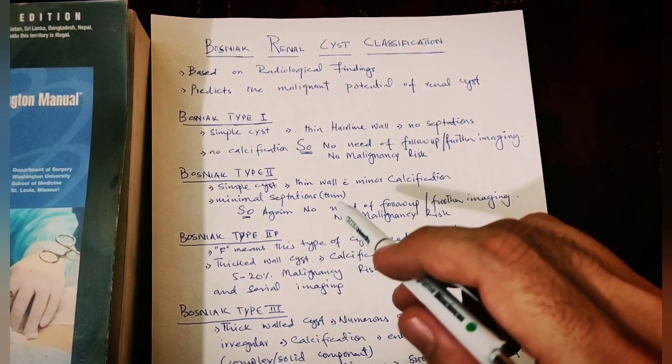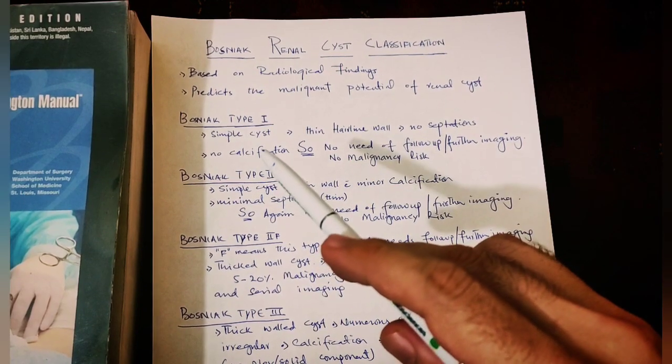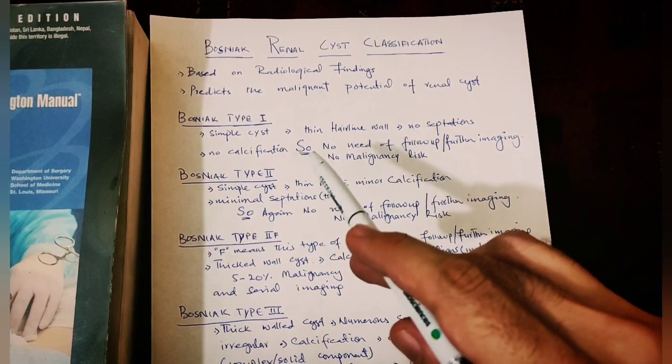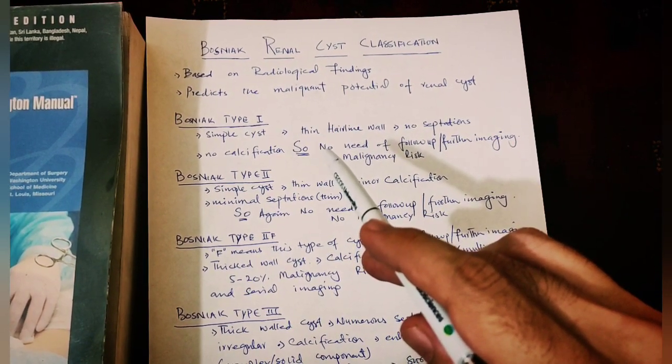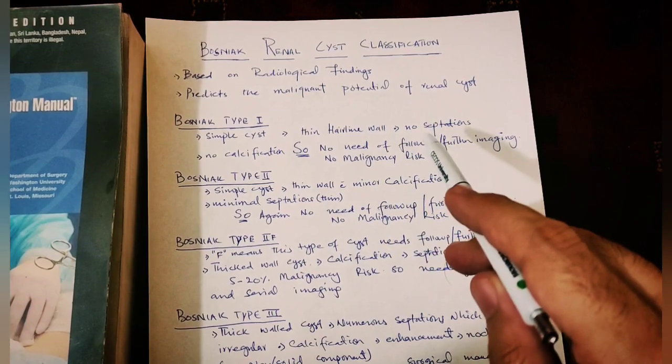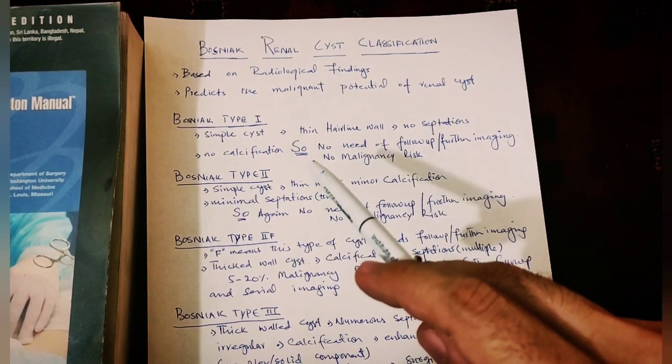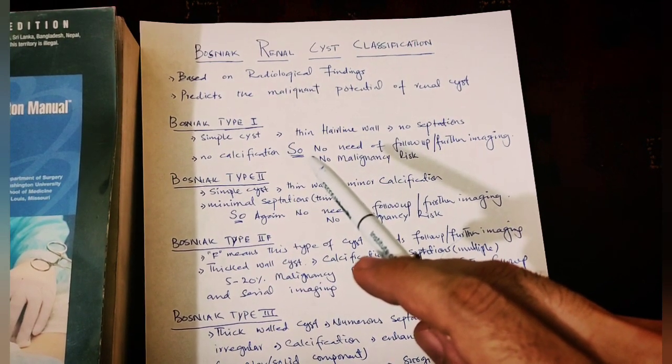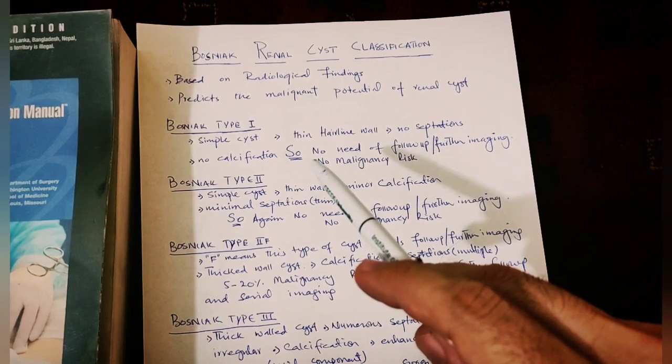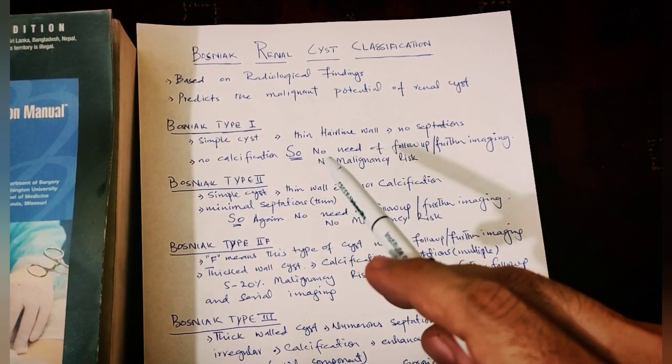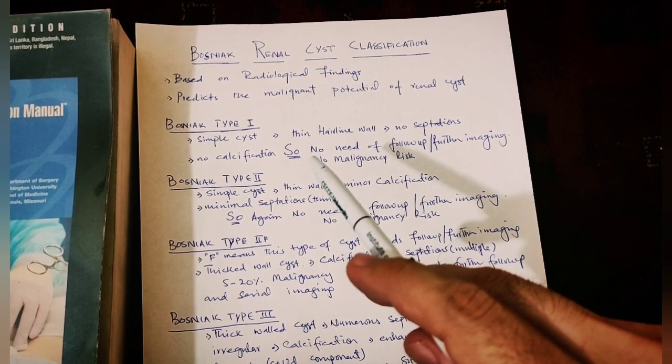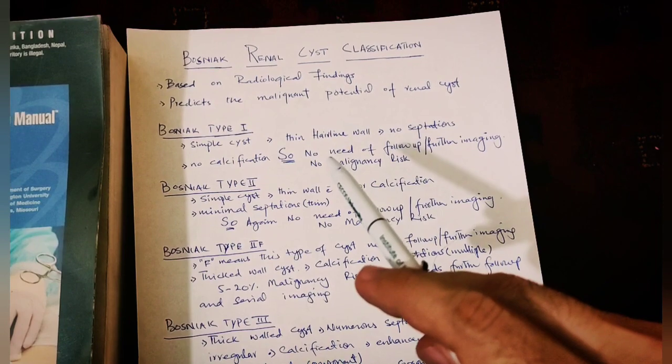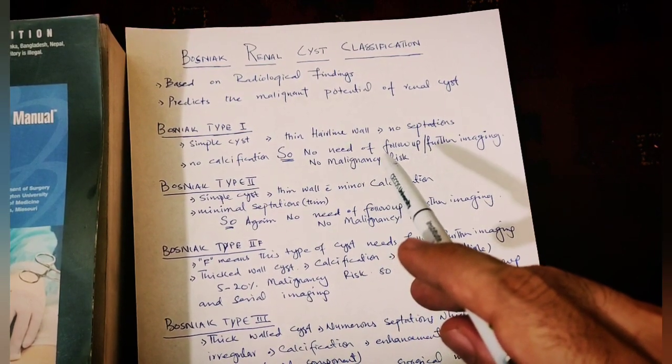Bosniak Type I renal cyst means it is a simple cyst with a thin hairline wall and there is no septation and no calcification. Since malignant features like septation, calcification, and nodularity are absent in Type I renal cyst, there is no risk of malignancy and hence no need of further follow-up or imaging.